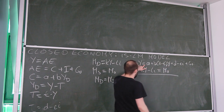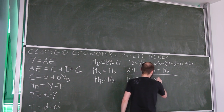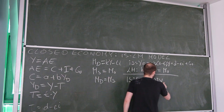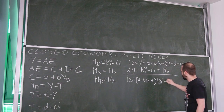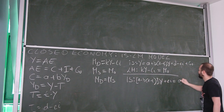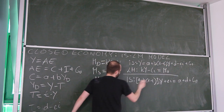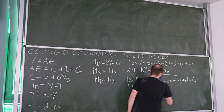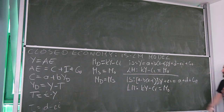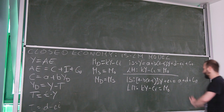For IS, after rearranging, we get (1 minus b)(1 minus t) times y on the left-hand side, then the interest rate expression, and on the right-hand side we have a plus d plus g0. For LM, everything stays the same since all endogenous variables are already on the left. Remember, LM represents all combinations of income and interest rate for which there is equilibrium in the money market.